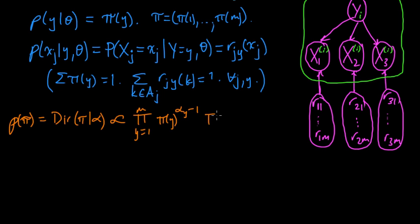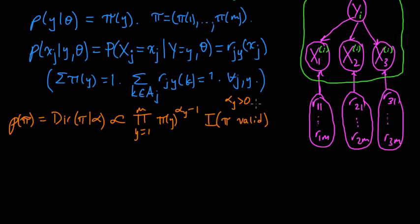That's the important part, and we can't forget the indicator function — the indicator that π is in the probability simplex, indicating it's a valid PMF. Each α_y is strictly positive for all y. This α is just a vector of alphas from 1 to m.